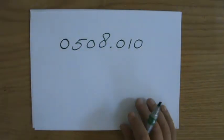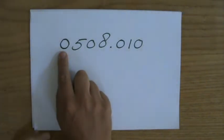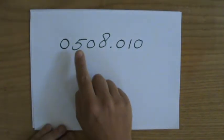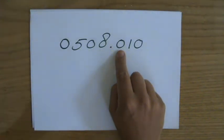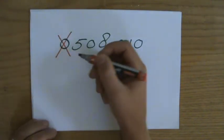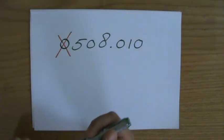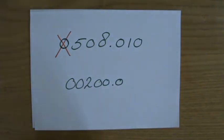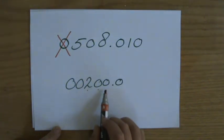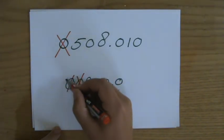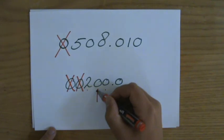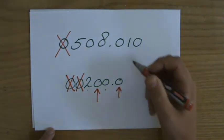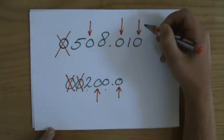However, zeros written on the left side of your number — for example, 0508.010 — do not count as significant figures, because they add no value. My first significant figure is still the 5, second is the zero, third is the 8, fourth is the zero. Those leading zeros don't count because we could put them in front of any number. So for a number like 200.0, there are four significant figures — the leading zeros are ignored, but zeros in the middle and at the end do count.